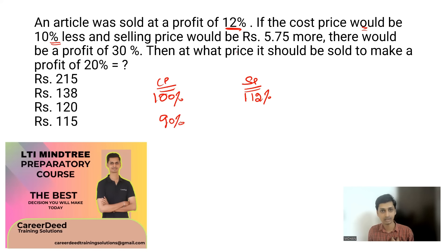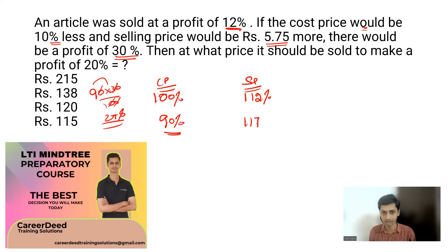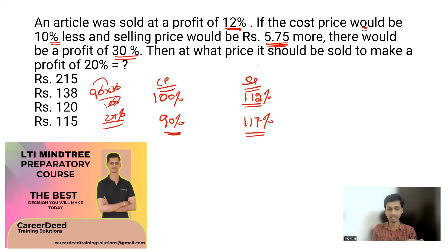If cost price is 10% less, we purchase at 90% of the actual cost. With the selling price 5.75 more, we get 30% profit. At 90% cost with 30% profit: 30% of 90 = 27, so selling price = 90+27 = 117%. In the first case it was 112%, now it's 117%. The 5% difference corresponds to 5.75 rupees.